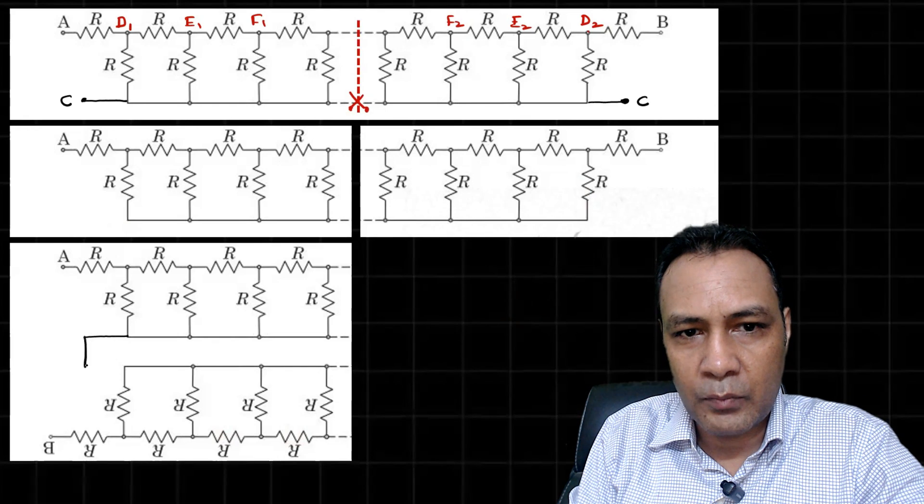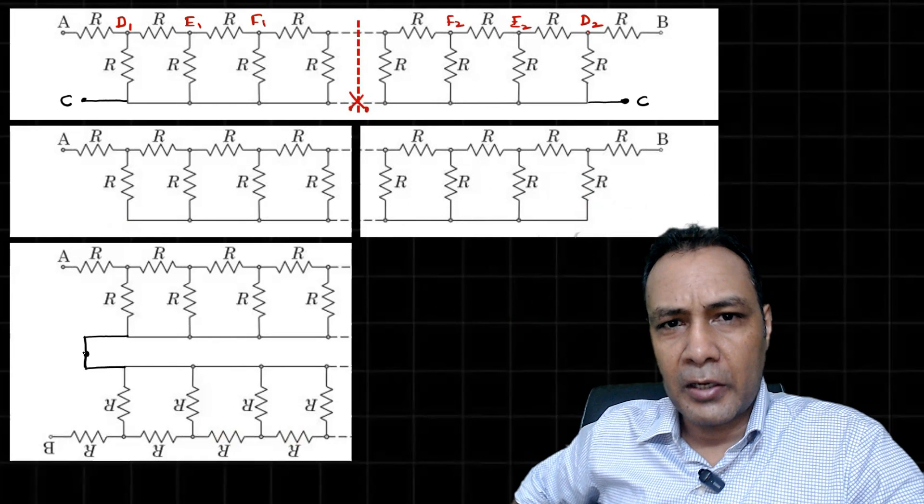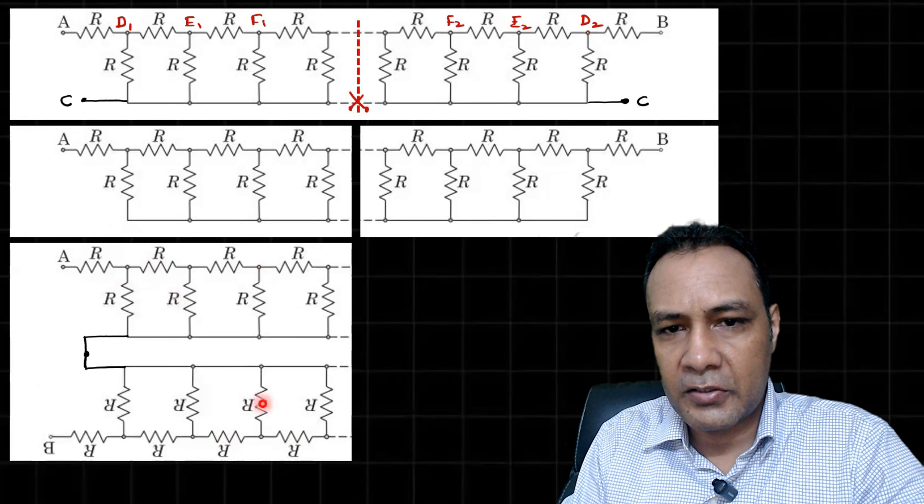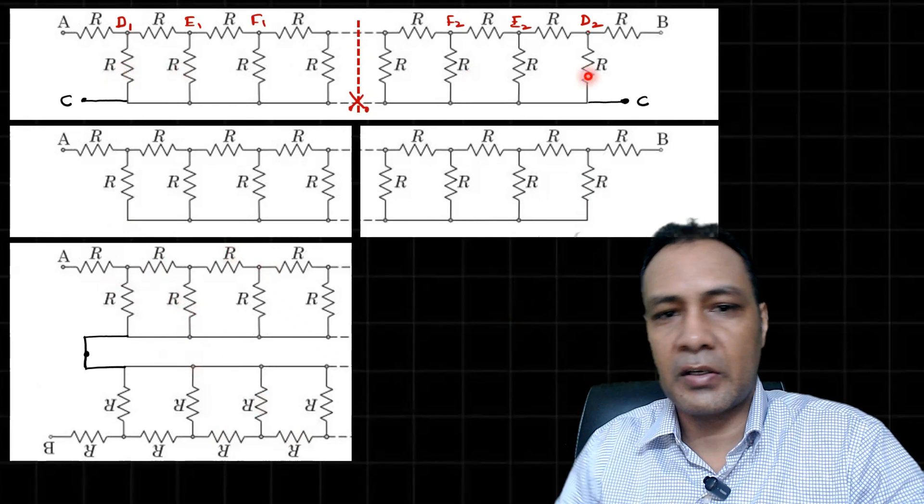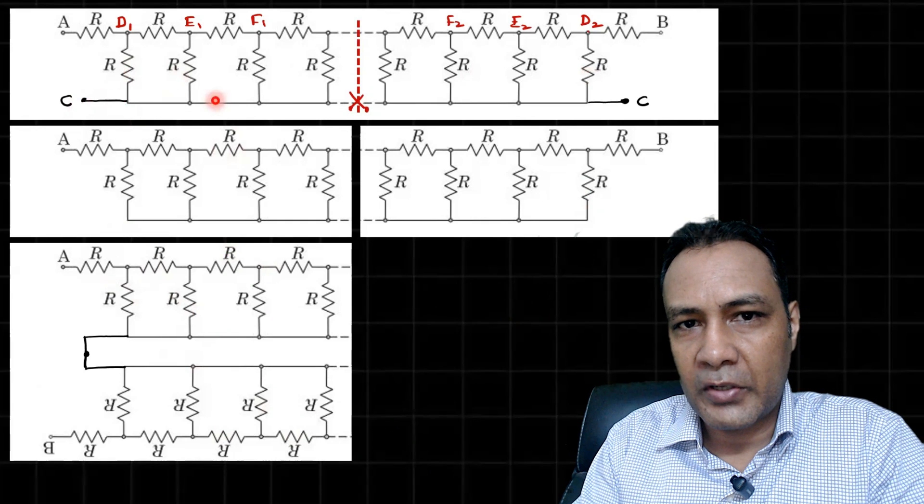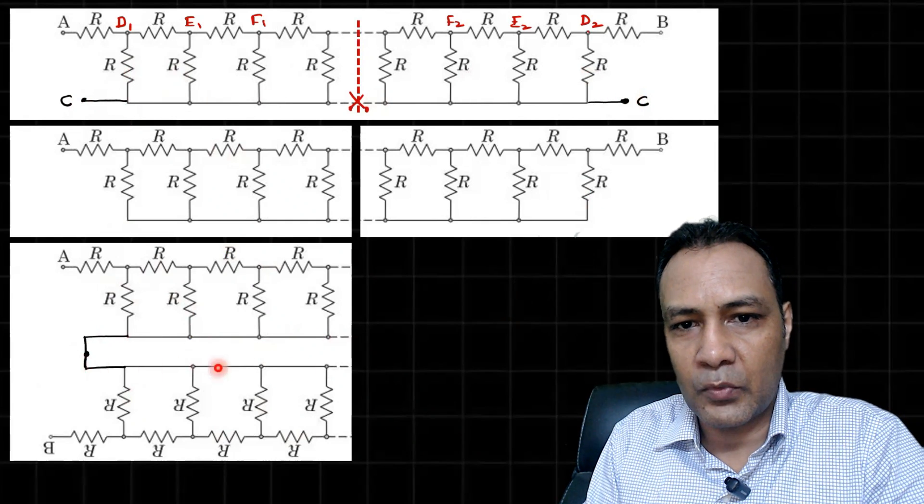Now I want to join this at the point. I claim that this ladder, this network and this network are the same thing. Why? These are the same points at the same potential.